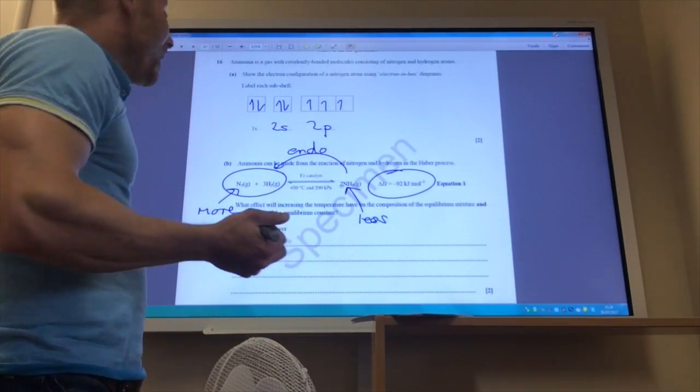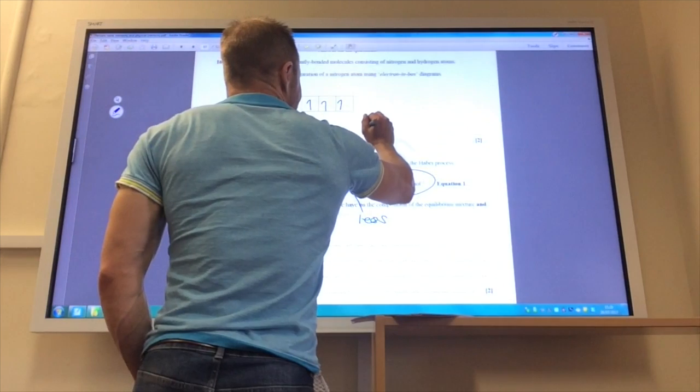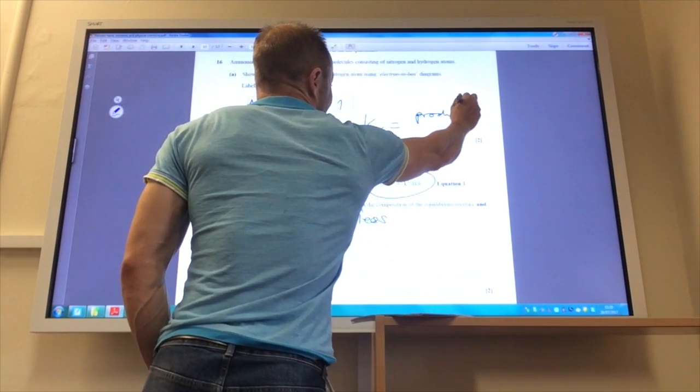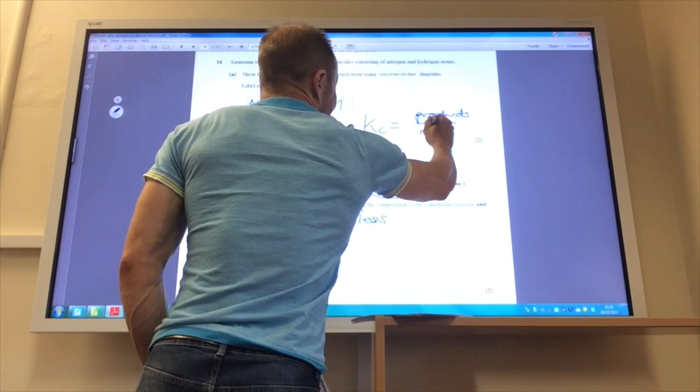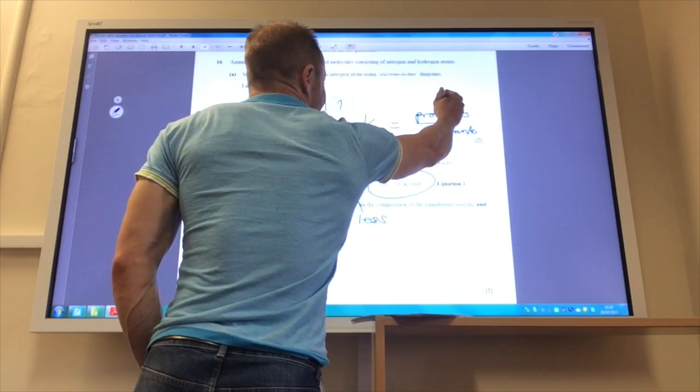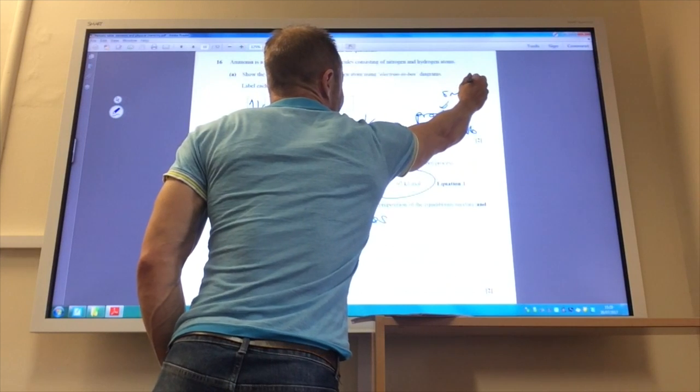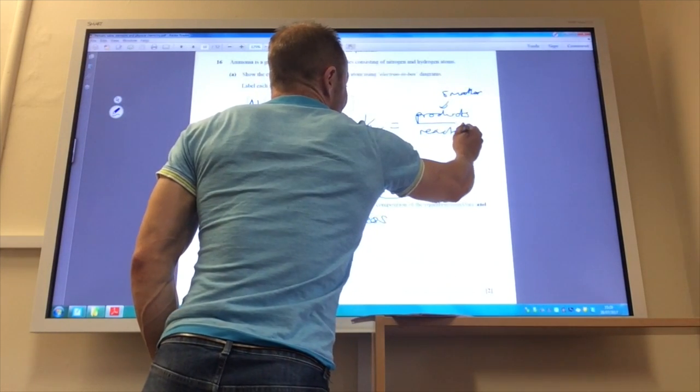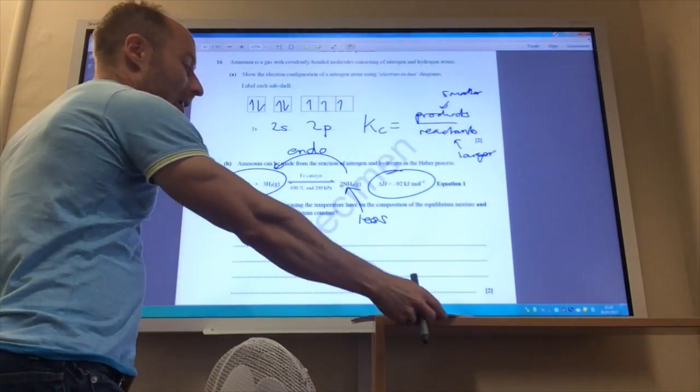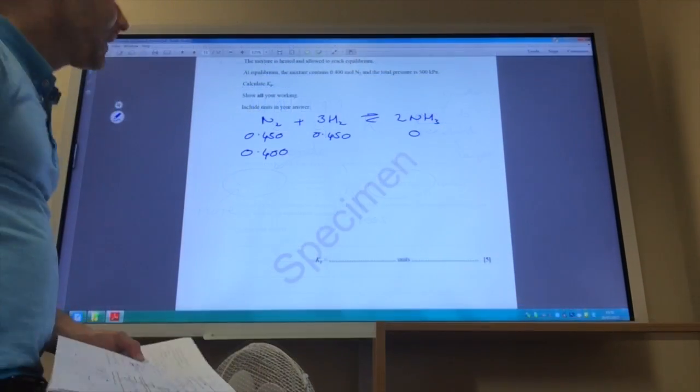So how will it affect Kc? Well, Kc is products over reactants, so products is less, so that's getting smaller. I'm getting more reactants, that's getting larger, so Kc will become smaller, it will decrease.